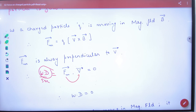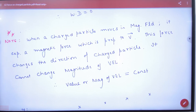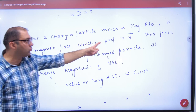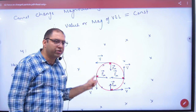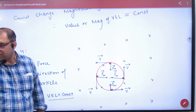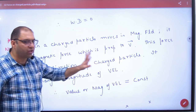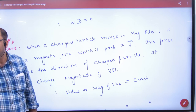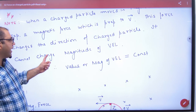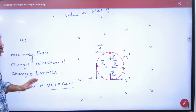This is an important note. When a charged particle moves in a magnetic field, it experiences a magnetic force perpendicular to V vector. Because of this, it moves in a circle. This force changes the direction of the charged particle, but does not change the magnitude of velocity. The magnitude of velocity always remains constant — that is an important point.